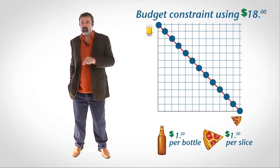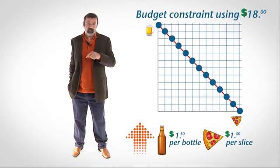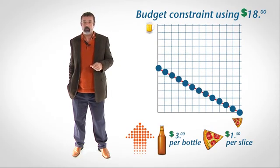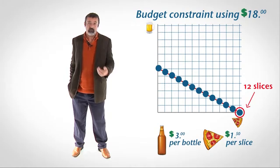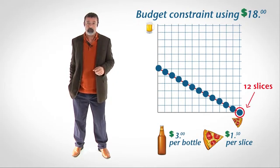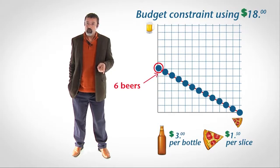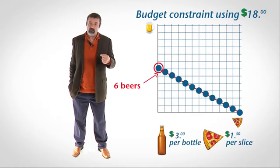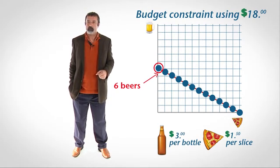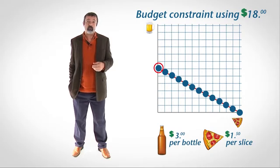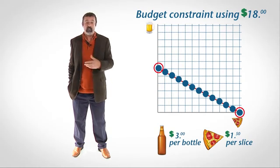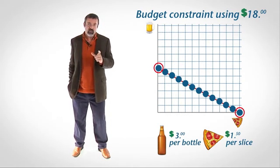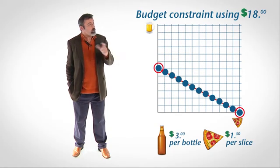How will your budget constraint move? Suppose you have $18 to spend. The price of pizza is $1.50 per unit, but the price of beer rises from $1.50 per unit to $3 per unit. If you spend all of your money on pizza, you can buy 12 slices of pizza — the increase in the price of beer has not altered the amount of pizza you can buy. But if you spend all of your money on beer, you can only buy 6 beers. The increase in the price of beer has decreased the maximum number of beers you can buy. Recall that the vertical intercept is the amount of beer you can buy if you spend all your money on beer, and the horizontal intercept is the amount of pizza you can buy if you spend all your money on pizza. The increase in the price of beer causes the budget constraint to rotate to the left.